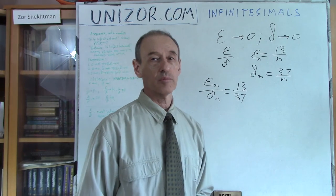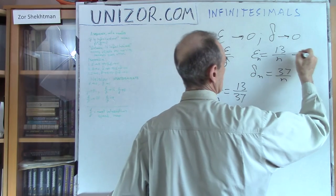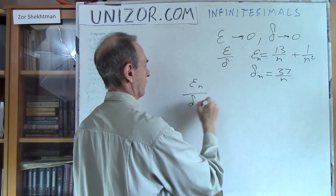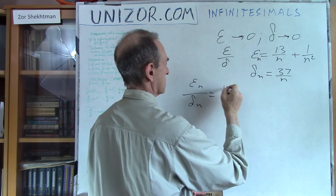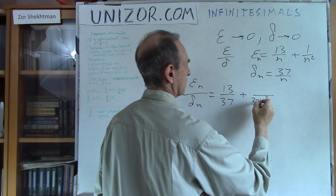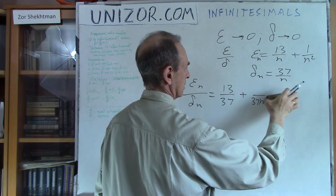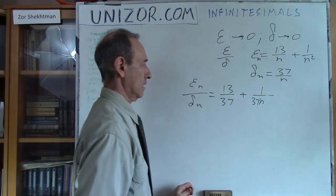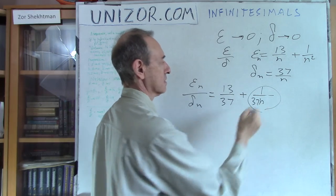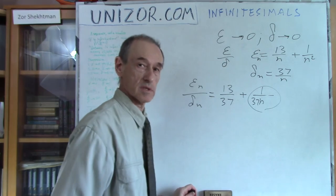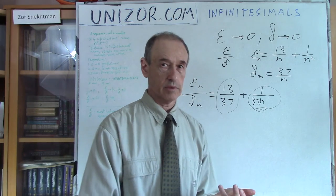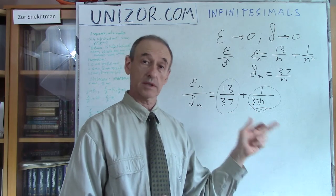Let's consider a slightly more complicated case. If epsilon_n is 13 over n squared and delta_n is 37 over n, then epsilon over delta equals (13/n²) divided by (37/n), which gives 13/37 times (1/n). We reduce by n, and we get 13/(37n). So it's no longer a constant. However, this thing is convergent to 13/37 — because 1/(37n) converges to zero, and the limit of the sum equals the sum of limits: 13/37 plus zero. So here the ratio is not equal to a constant, but converges to a constant.